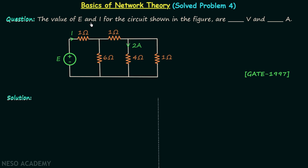We need to find the value of voltage E and the value of current I for the circuit shown in the figure. I will give you two different methods to solve this problem.